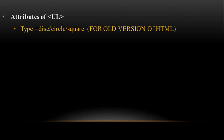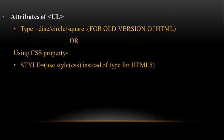The UL tag has one attribute: type. The type attribute has three values: disk, circle, and square. As we studied in the 11th standard, this is for the older version of HTML. For higher versions of HTML, we use the style attribute which we use in CSS — cascading style sheet. We already learned CSS. In inline CSS we use style as an attribute, and here also we use style as an attribute with the UL tag.